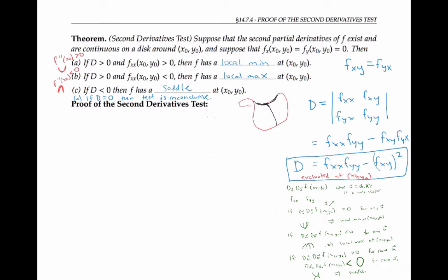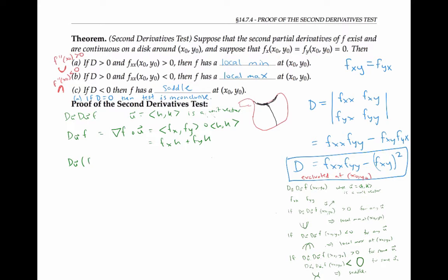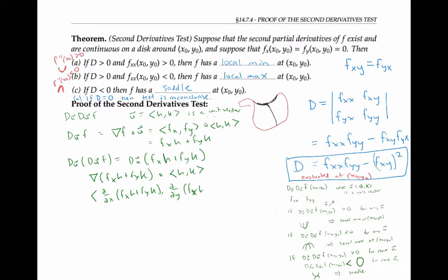Let's calculate D_u(D_u f), where u is the unit vector (h, k). Starting with D_u f, that's the gradient of f dotted with u, giving f_x · h + f_y · k. Now we take the directional derivative of that quantity, meaning we take the gradient of (f_x · h + f_y · k) dotted with u. That gives us the vector (f_xx · h + f_yx · k, f_xy · h + f_yy · k) dotted with (h, k).